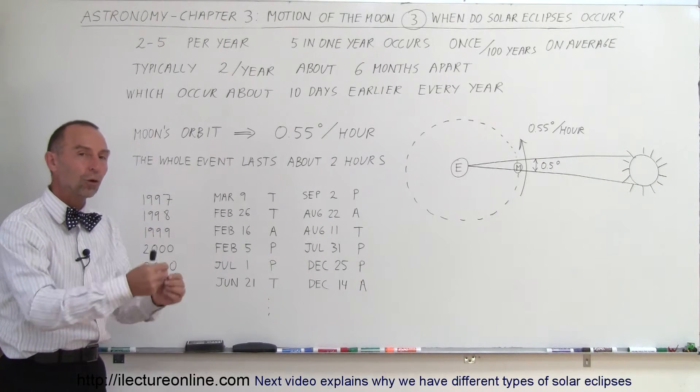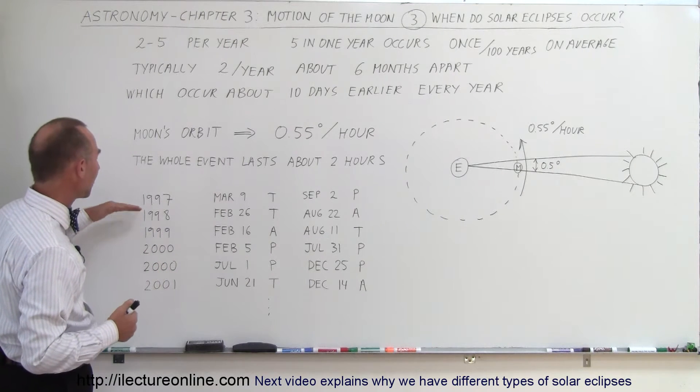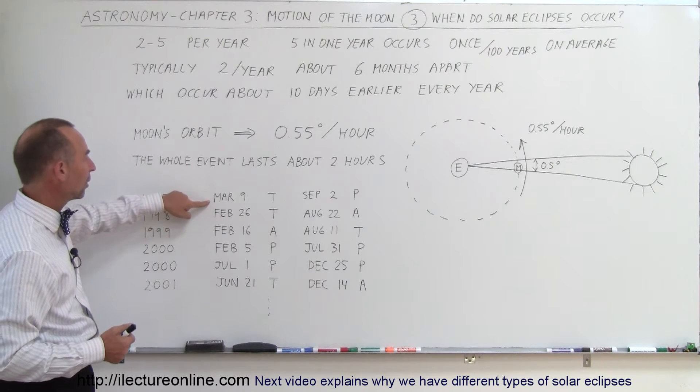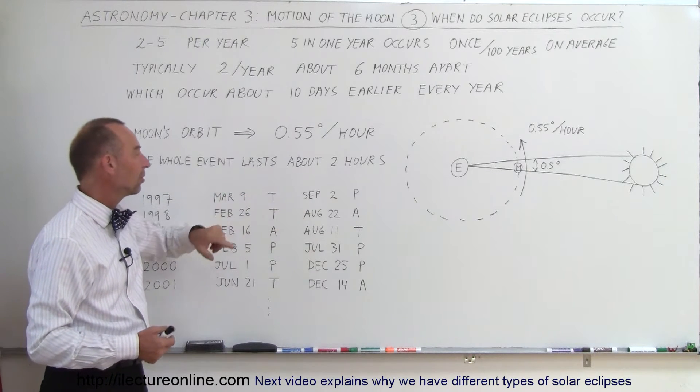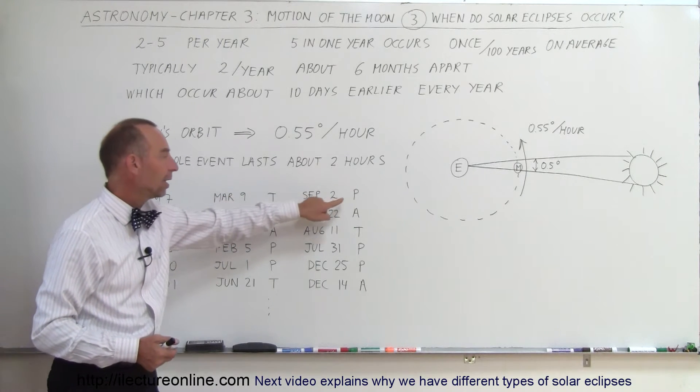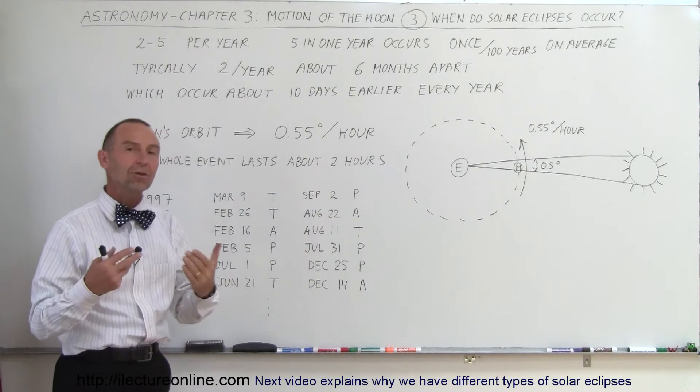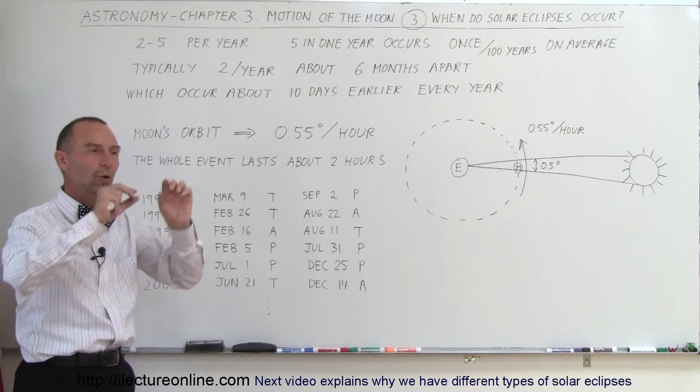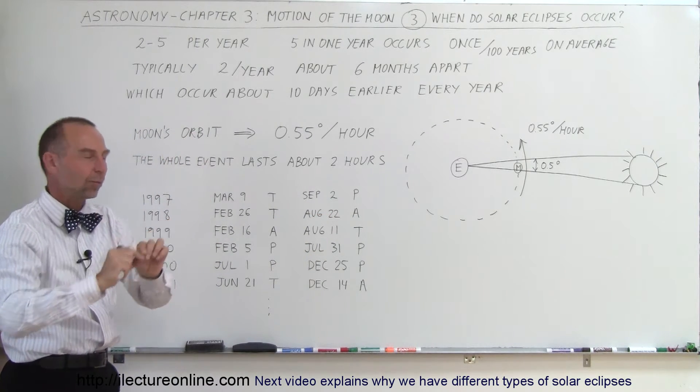This event happens ten days earlier every year. So here are some examples. In 1997, we had one on March 9th and one on September 2nd. It was a total eclipse and a partial eclipse. A stands for annual eclipse, where the Moon couldn't quite cover the whole disk of the Sun, and the edge of the Sun was still visible.